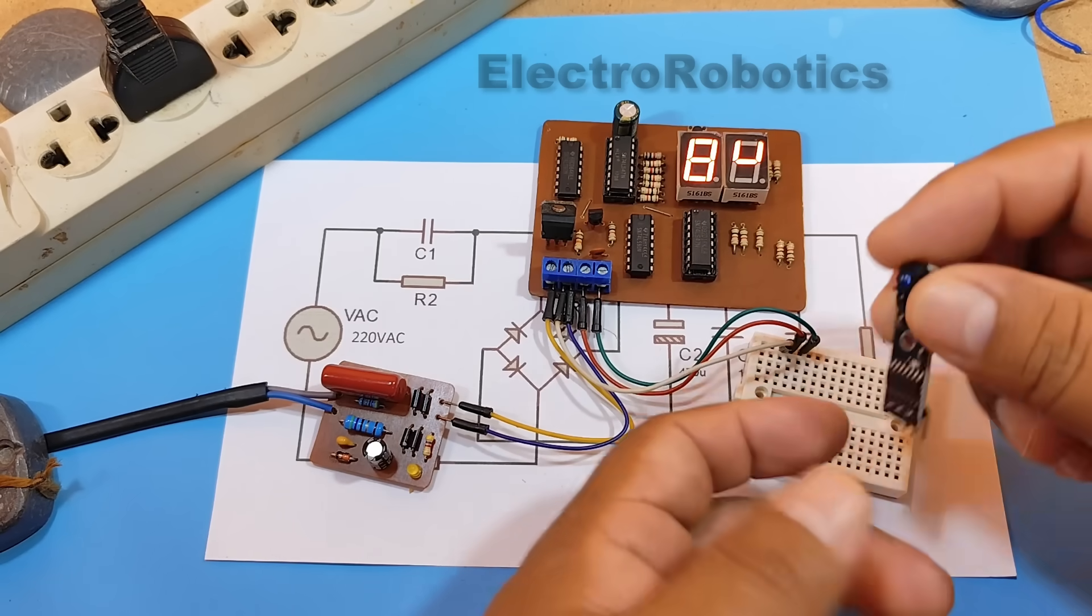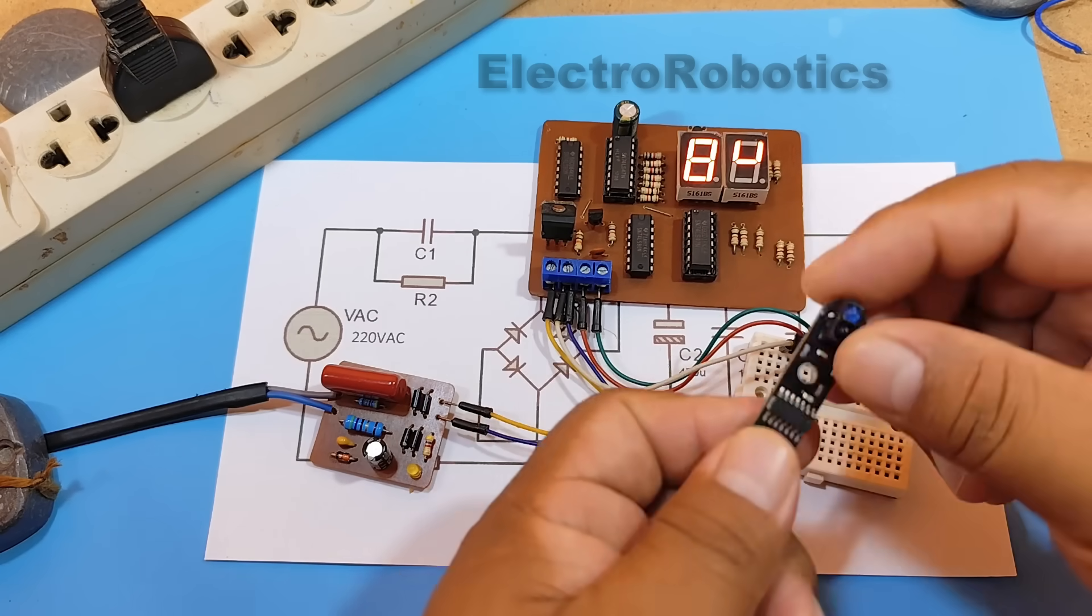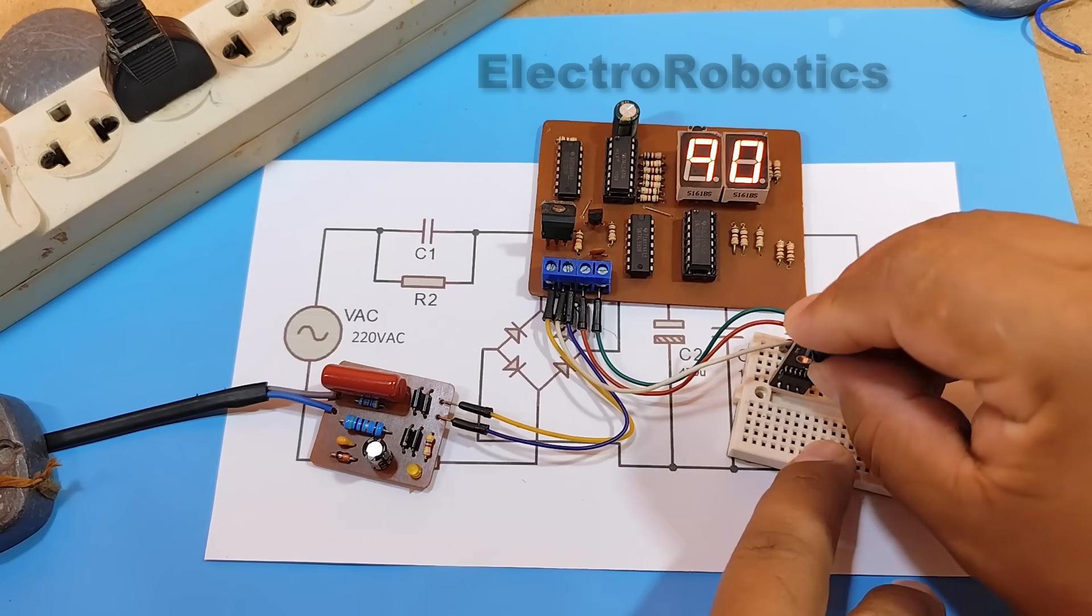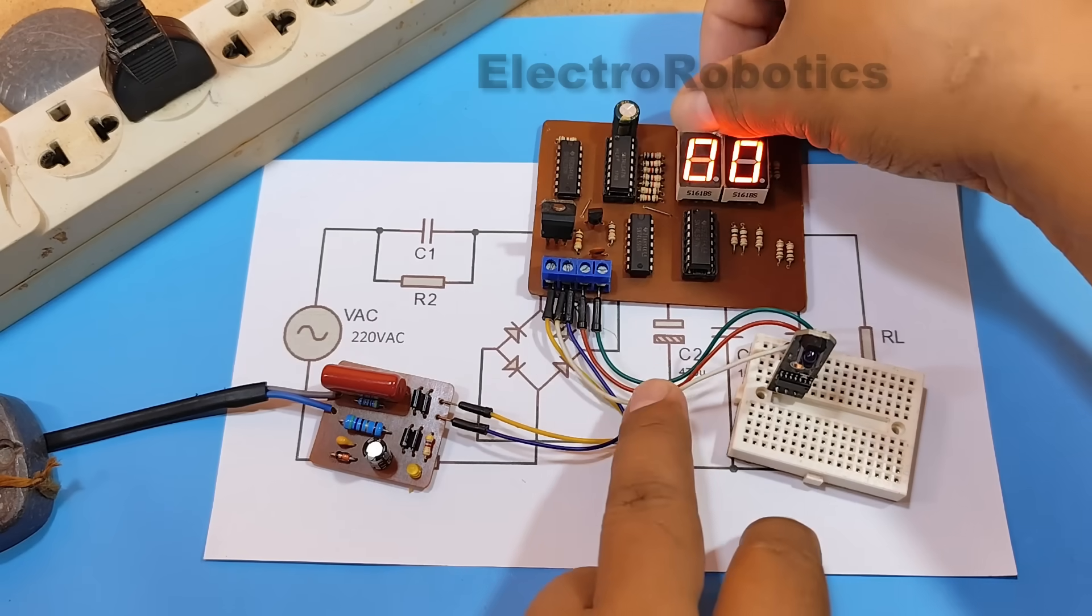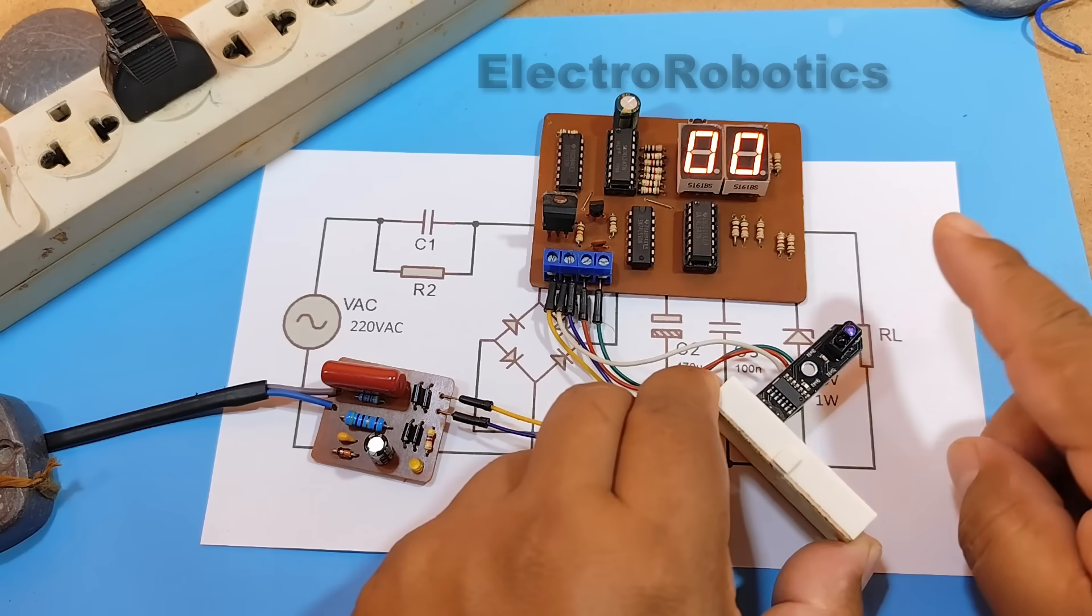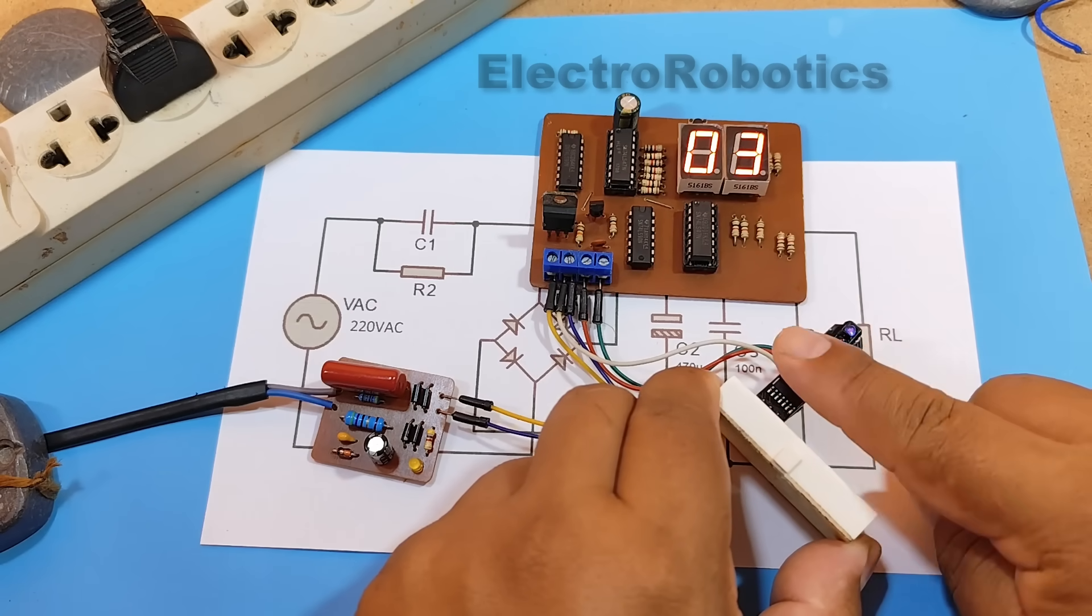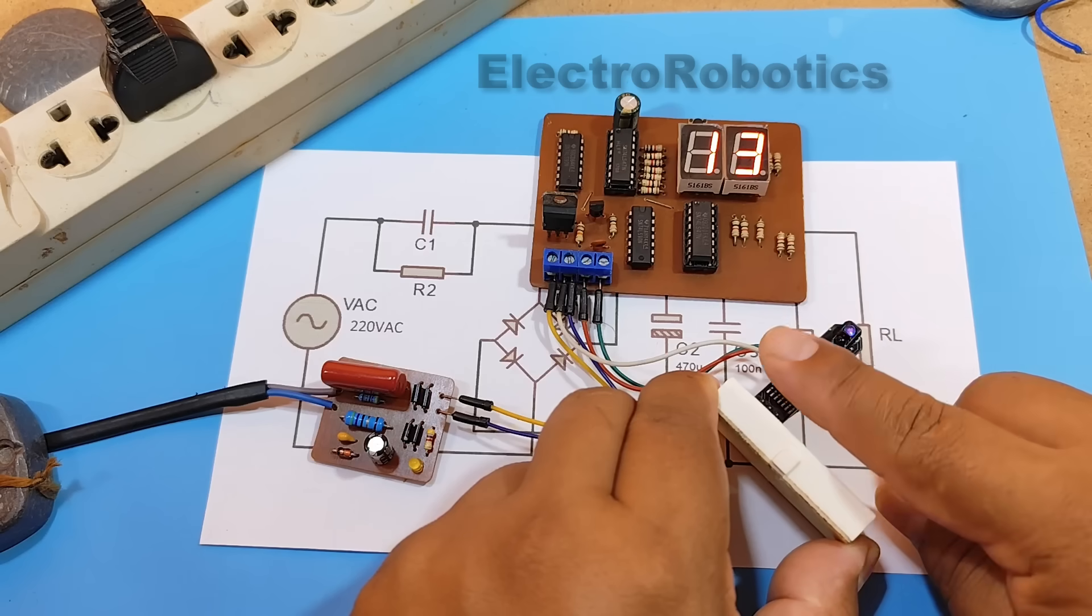Additionally, we're going to connect this line follower module or infrared sensor. We're going to reset the electronic board and see how it works. As you can see, our electronic board is working without problems using a capacitive power supply.